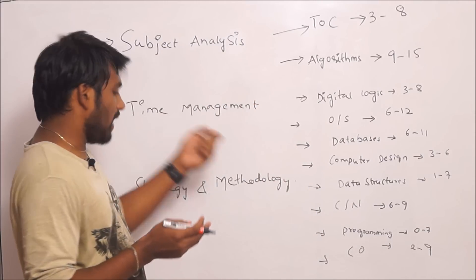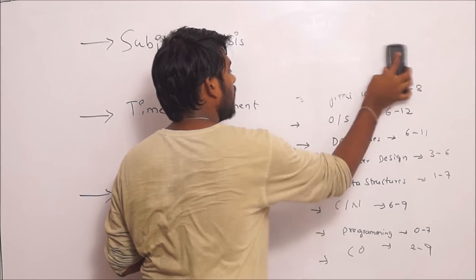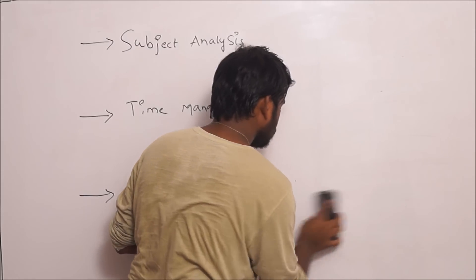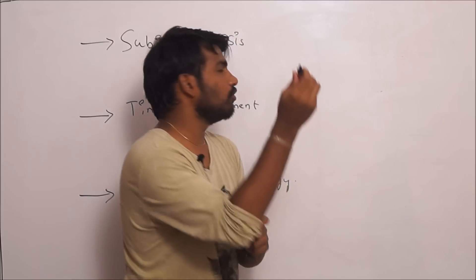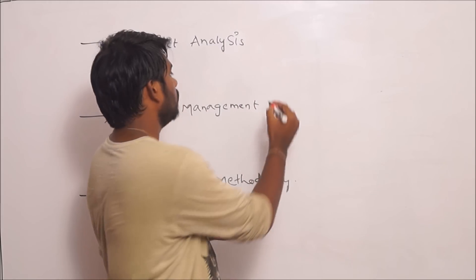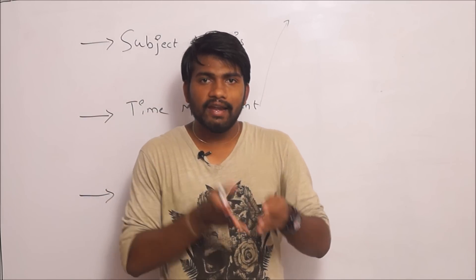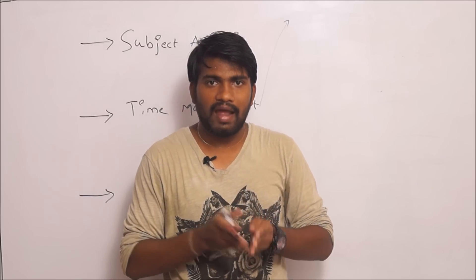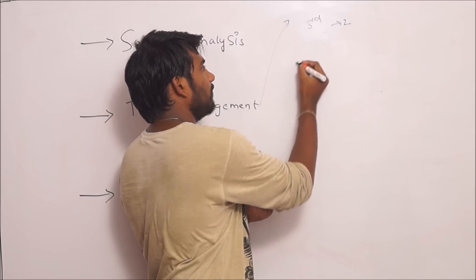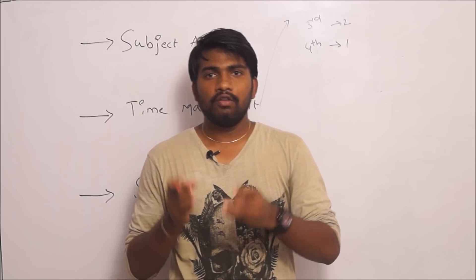The next step is time management. The crucial important thing is how we are able to maintain the time. There are two kinds of people attending GATE 2017: third-year students and fourth-year students. For third-year people, we have two years of time; for fourth-year, we have one year of time.